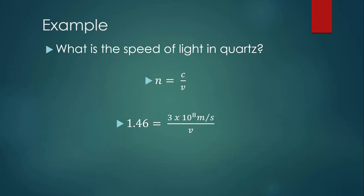And the speed of light in a vacuum, 3 times 10 to the 8 meters per second. We do a little cross multiplication and division, and we find that light travels 2.05 times 10 to the 8 meters per second in quartz. It's still really fast, 205 million meters per second, but it's still slower than light travels in a vacuum.